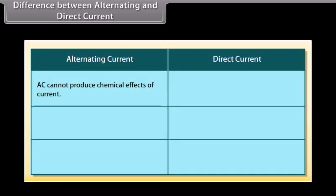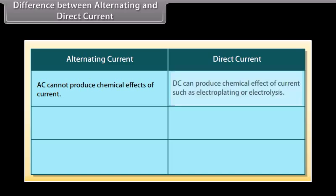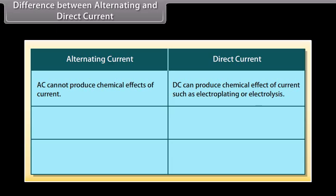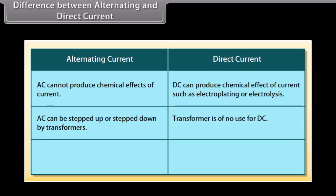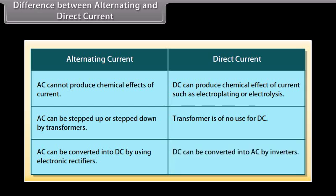The difference between alternating and direct current: AC cannot produce chemical effects of current, but DC can produce chemical effects such as electroplating or electrolysis. AC can be stepped up or stepped down by transformers, but a transformer is of no use for DC. AC can be converted into DC by using electronic rectifiers, whereas DC can be converted into AC by inverters.